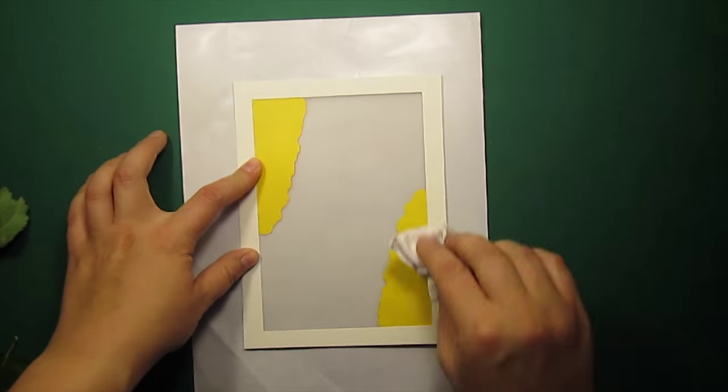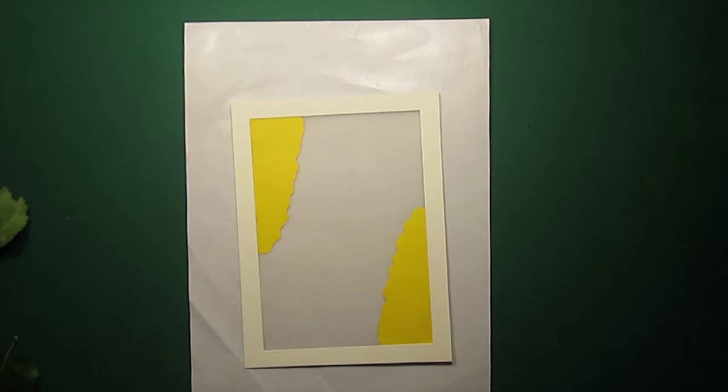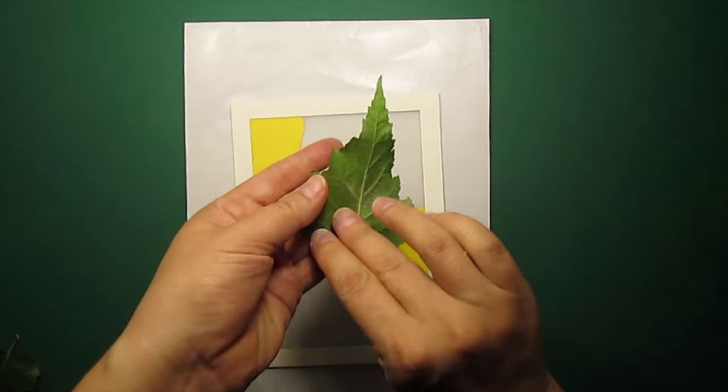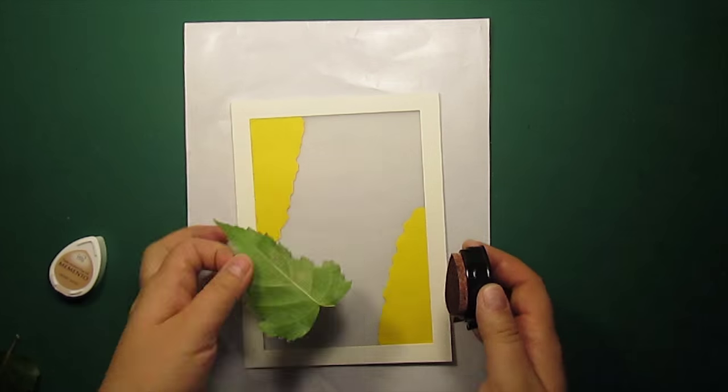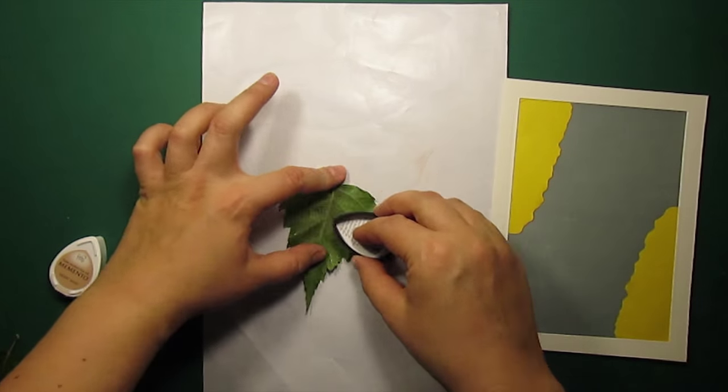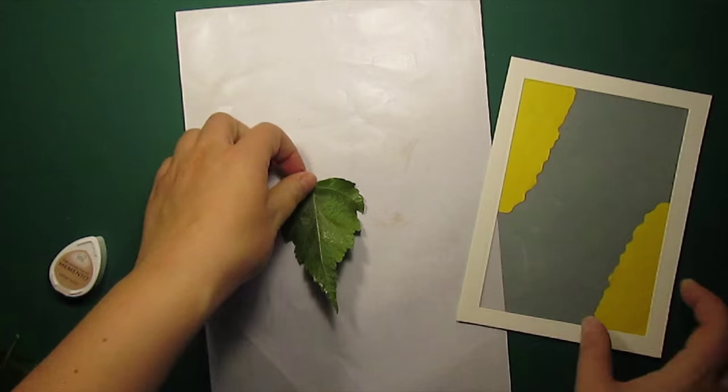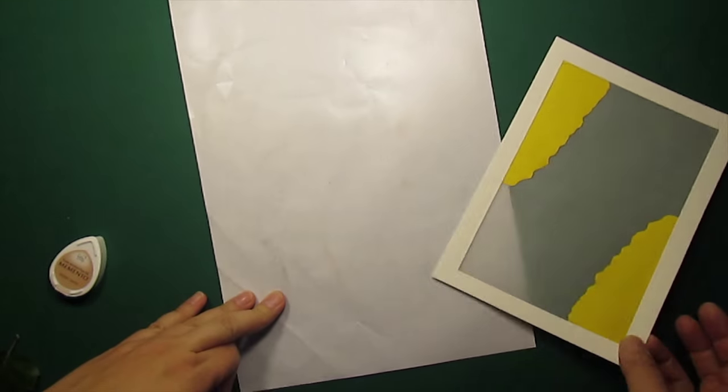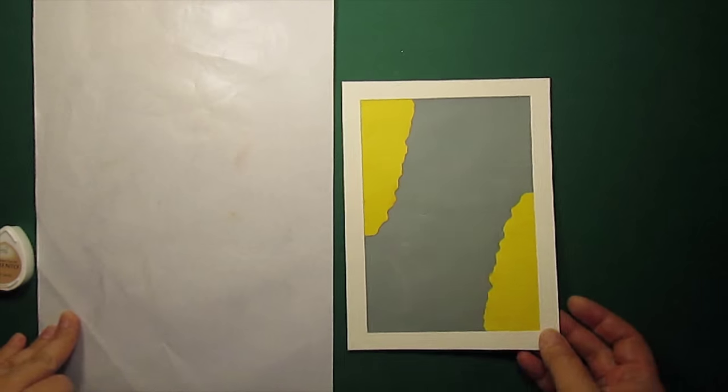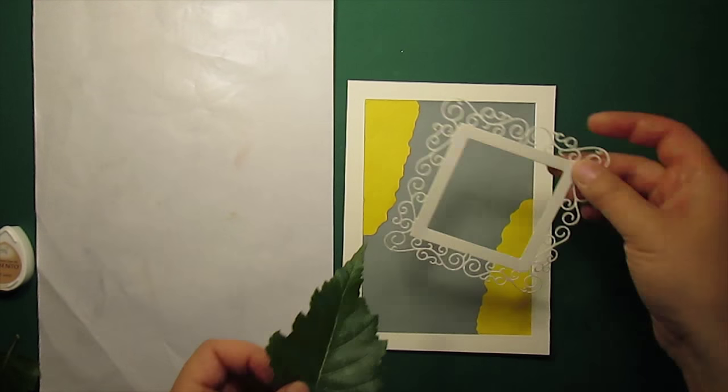And now let's do some leaf printing. First I'm going all over the surface with the anti-static pad, and then I'm inking up the birch leaf on the side where the veins show better. After that I just define where I want it on a card, and then press it with a brayer.